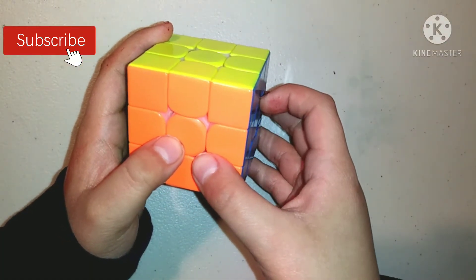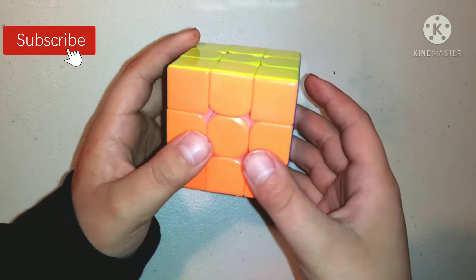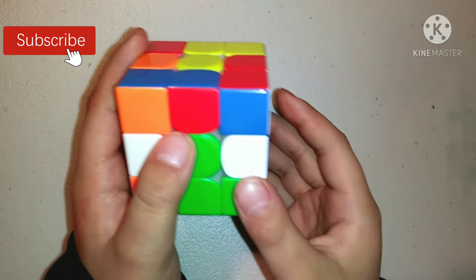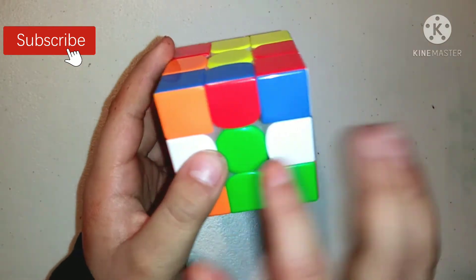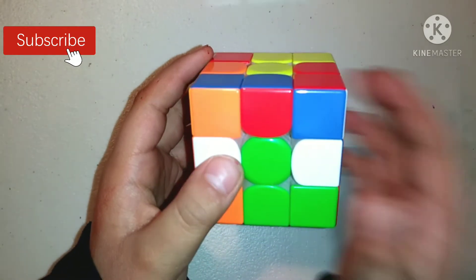My last tip is to use inspection. Inspection is when you look at the cube before you start solving it. During inspection, you're going to find all of your white edges—here and here and here—and you're going to see what you're going to do with them.